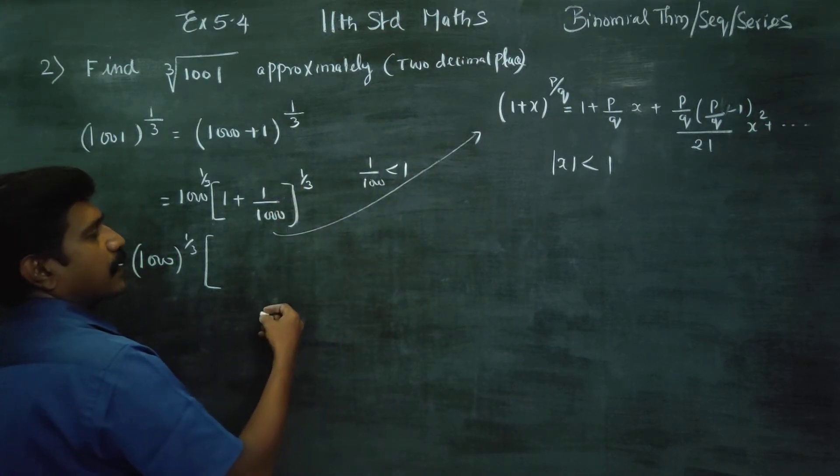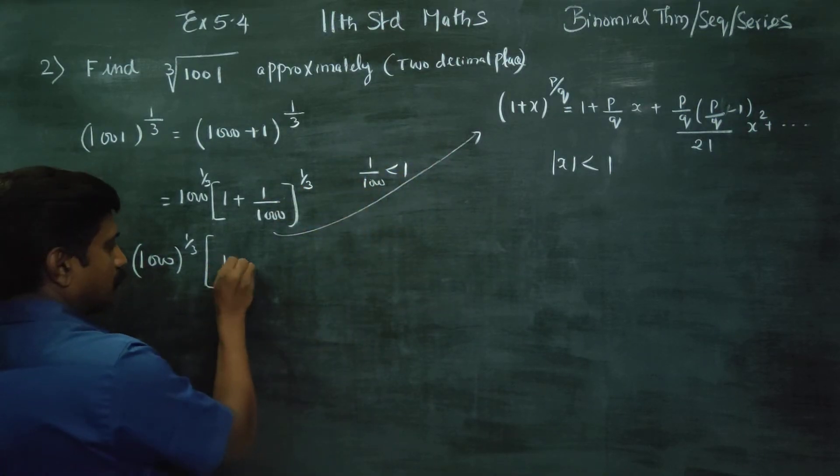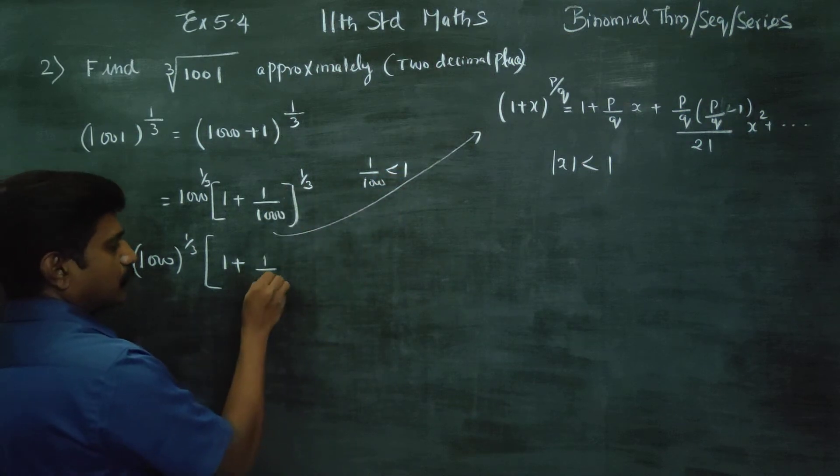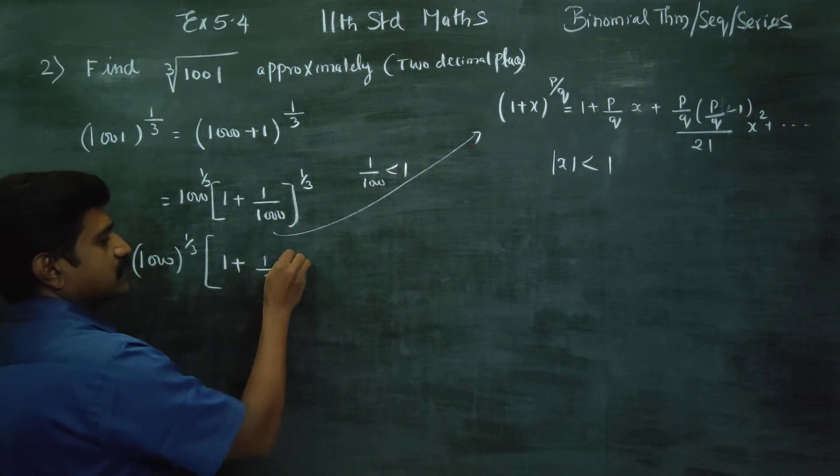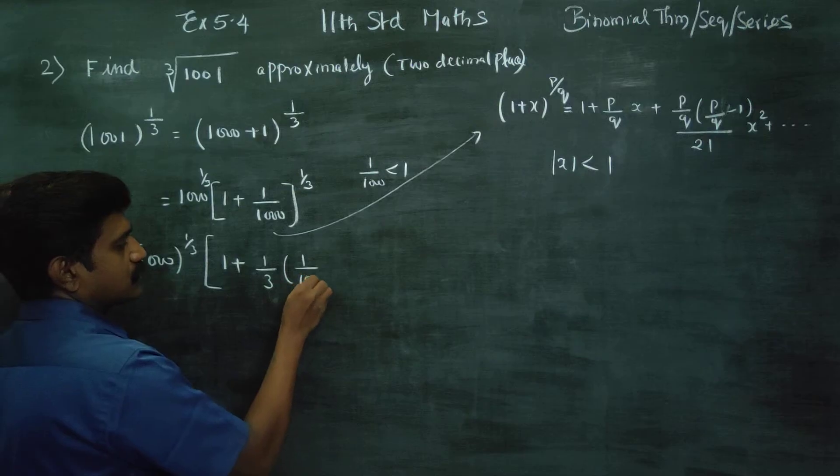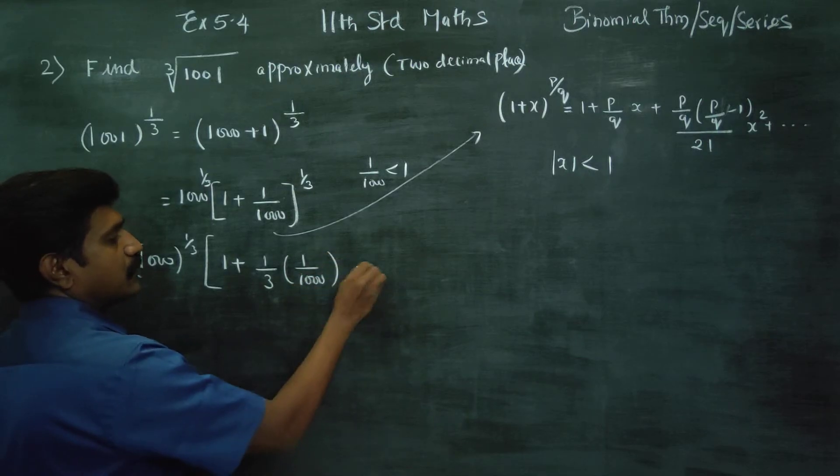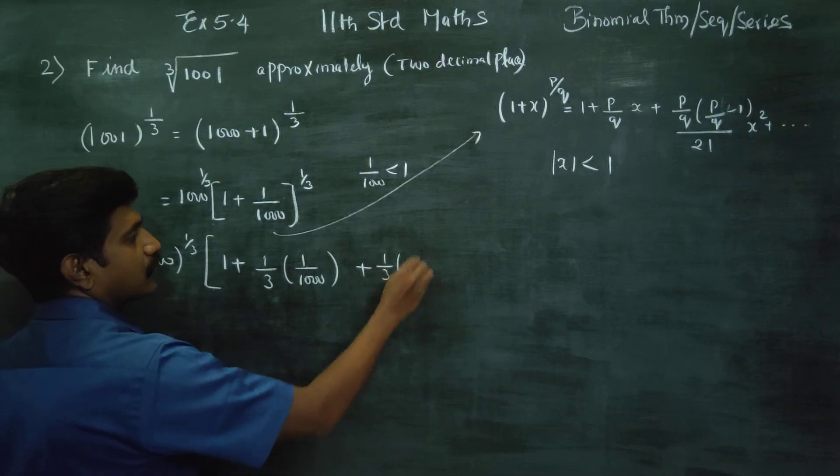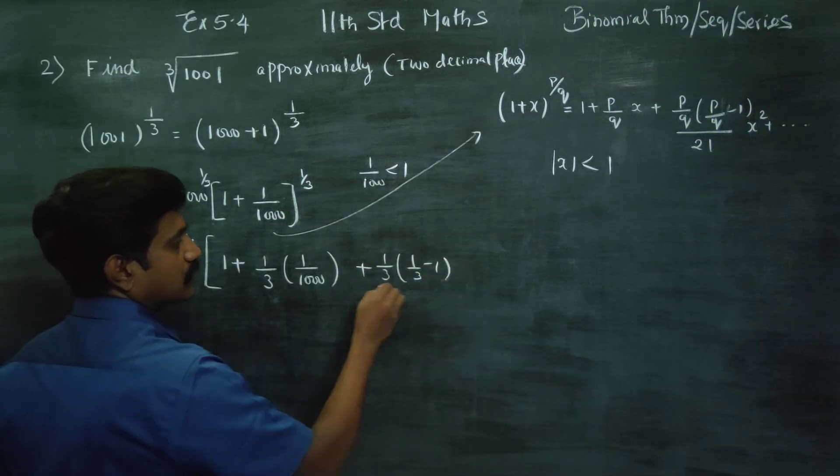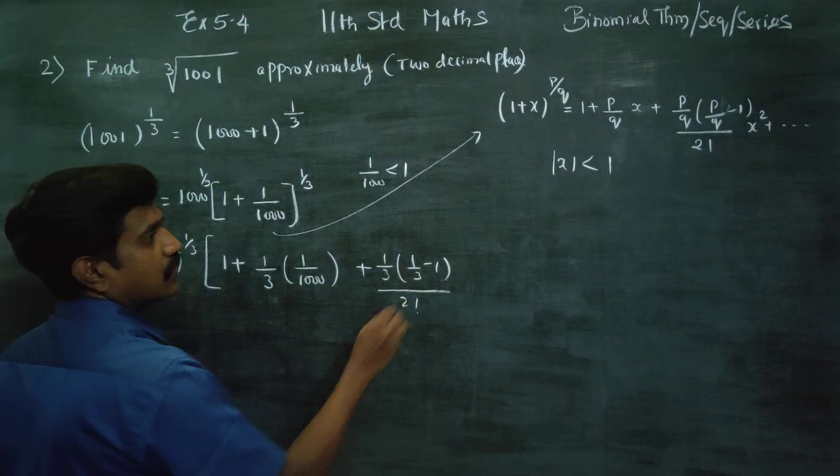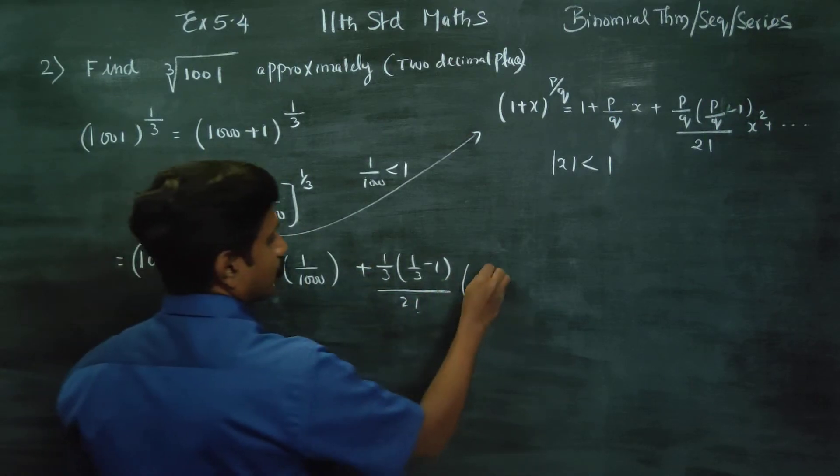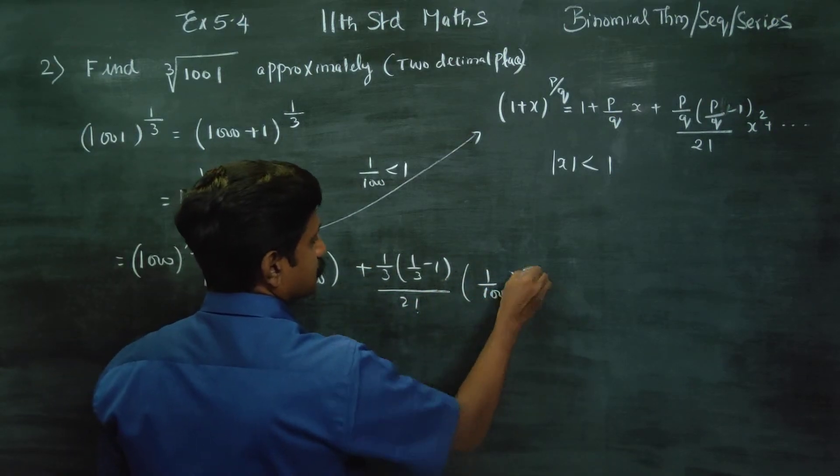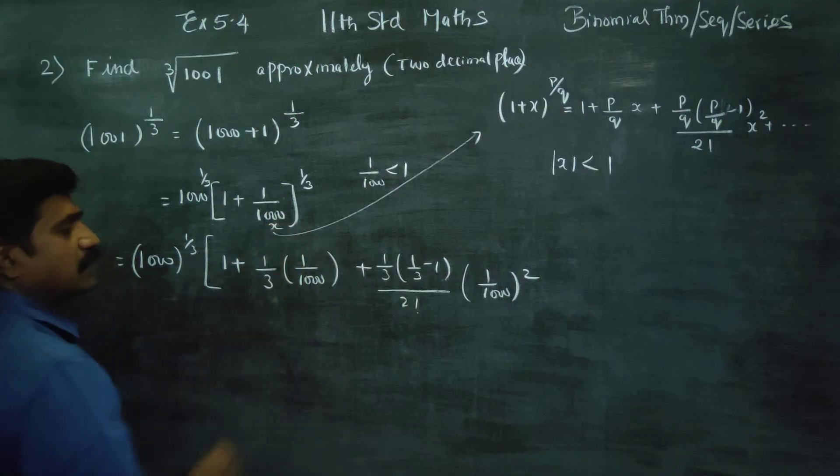We know the formula: 1 plus p by q, where p by q is 1 by 3 into x. x is 1 by 1000. Plus p by q, 1 by 3, 1 by 3 minus 1, by 2 factorial, into x square. 1 by 1000 whole square. This is my x.